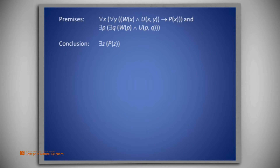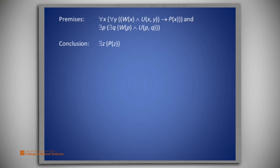Once again symbolically: the premises are 'for all x, for all y, W(x) and U(x,y) imply P(x)' and 'there exists p, there exists q, such that W(p) and U(p,q).' The conclusion is: there exists z such that P(z). So how would we construct a proof of this?